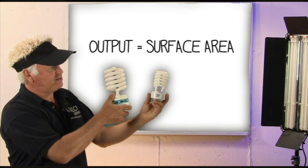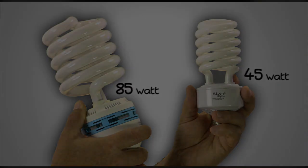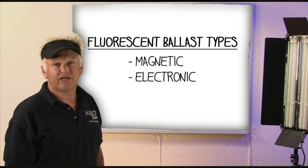All fluorescent lights require ballast circuits and there are two types of ballast. There's magnetic and electronic.